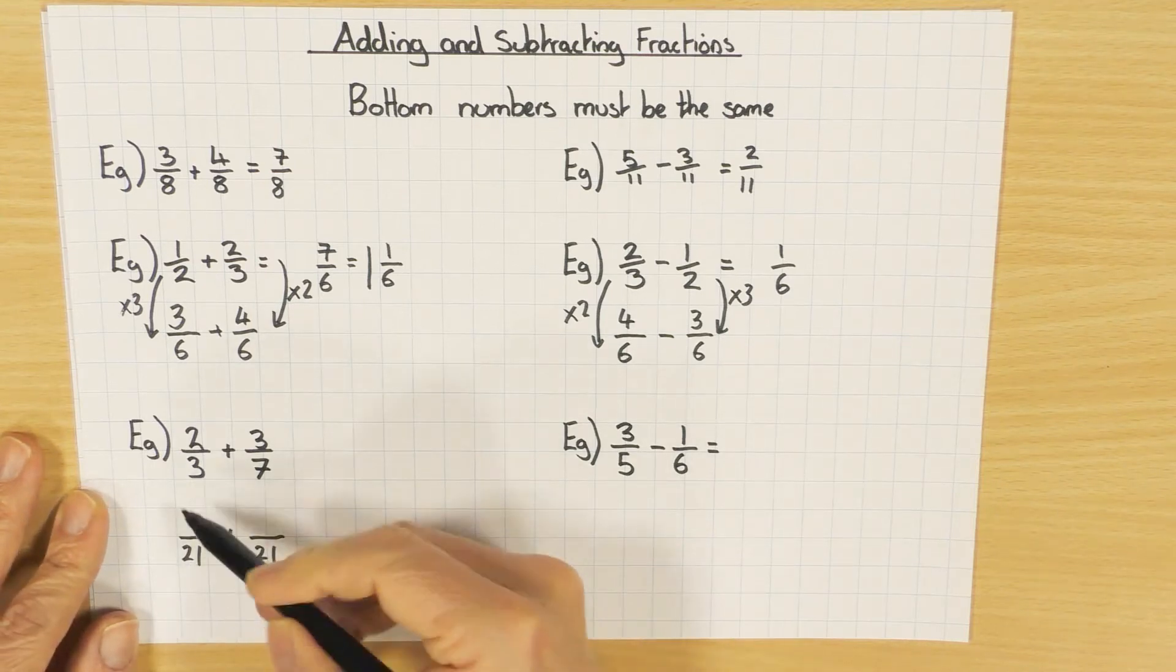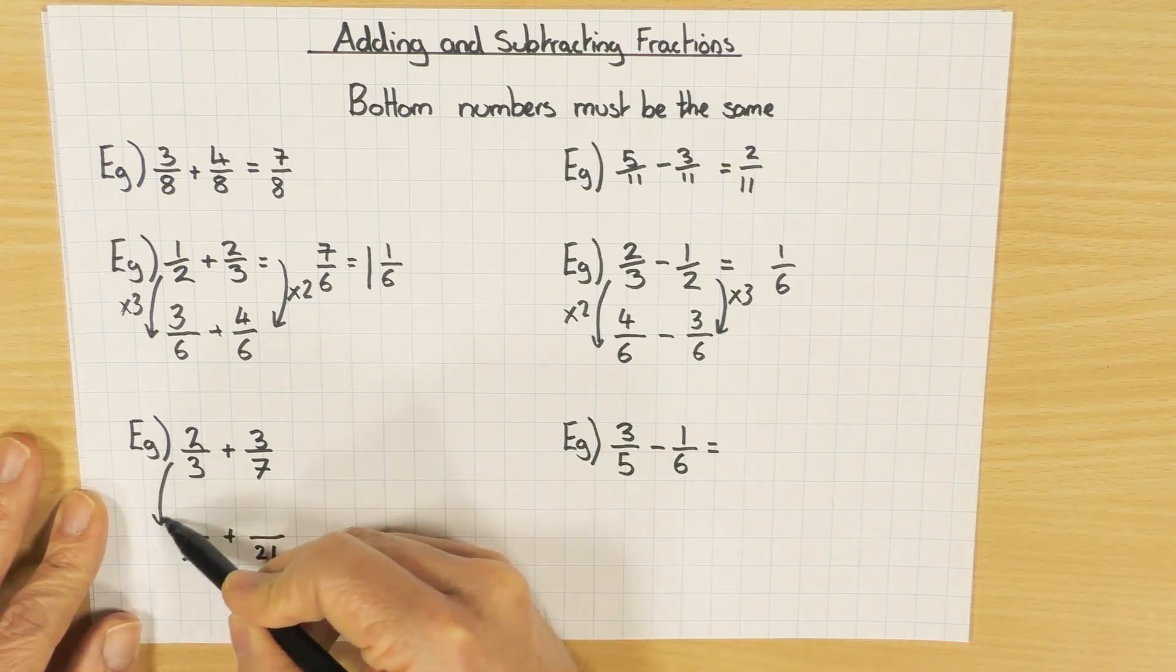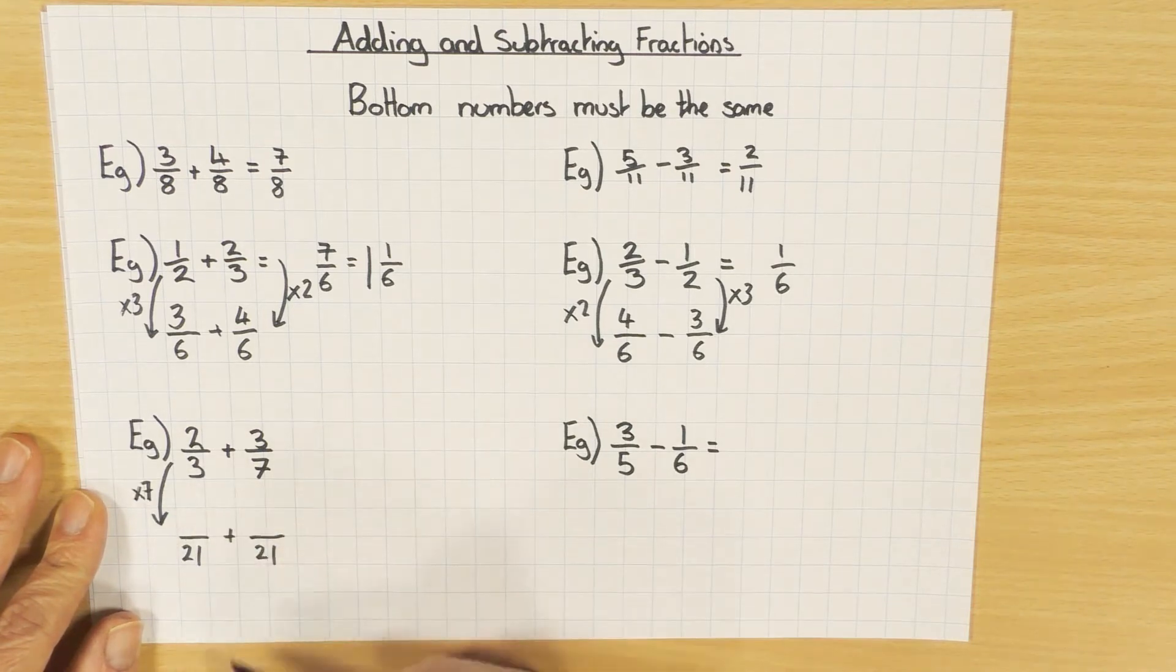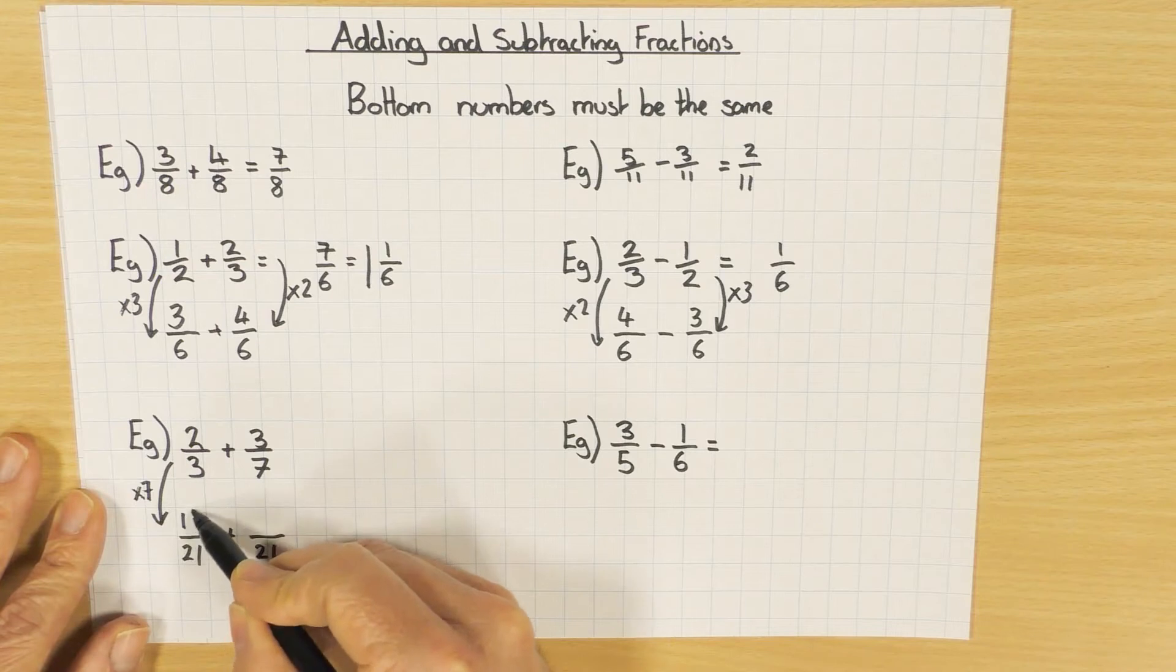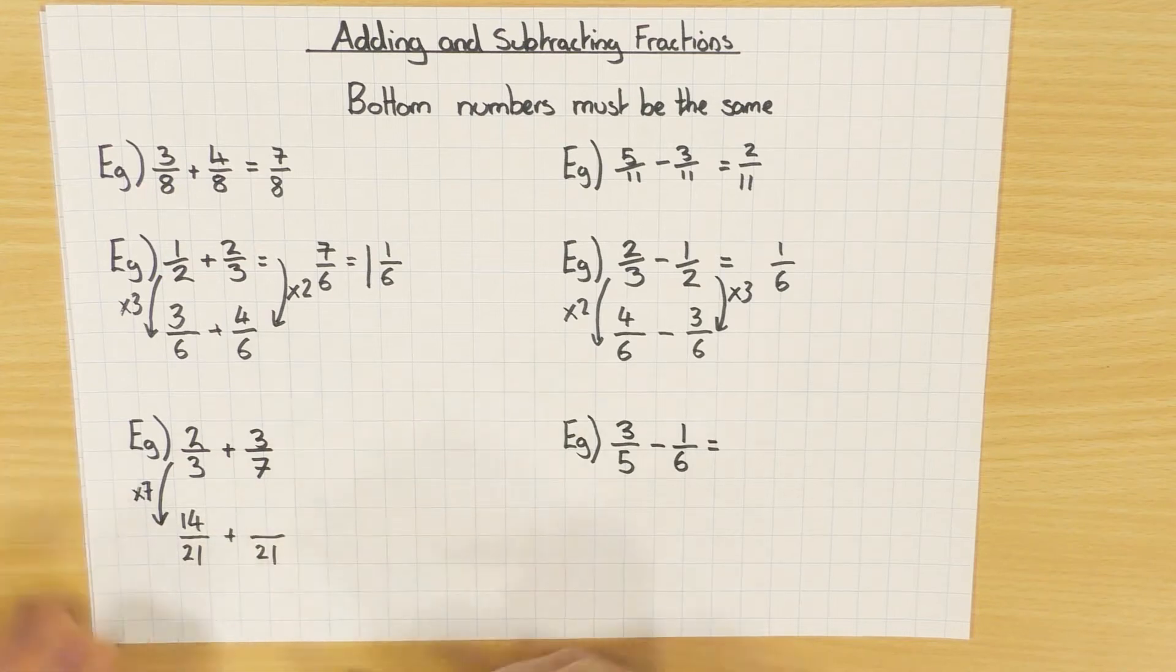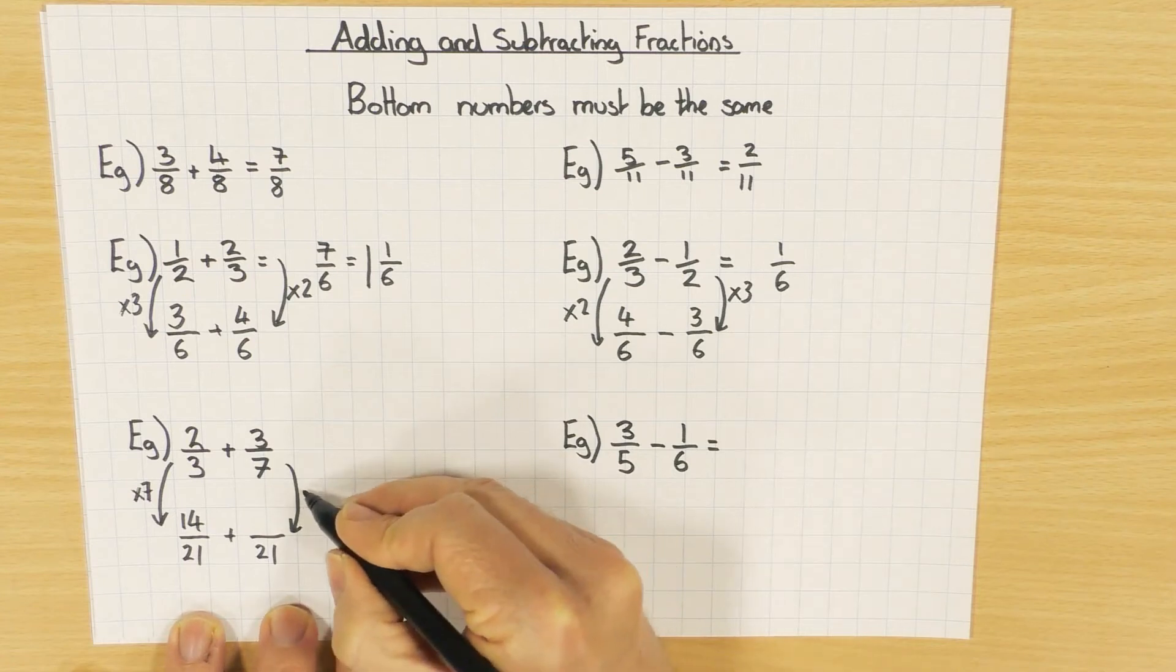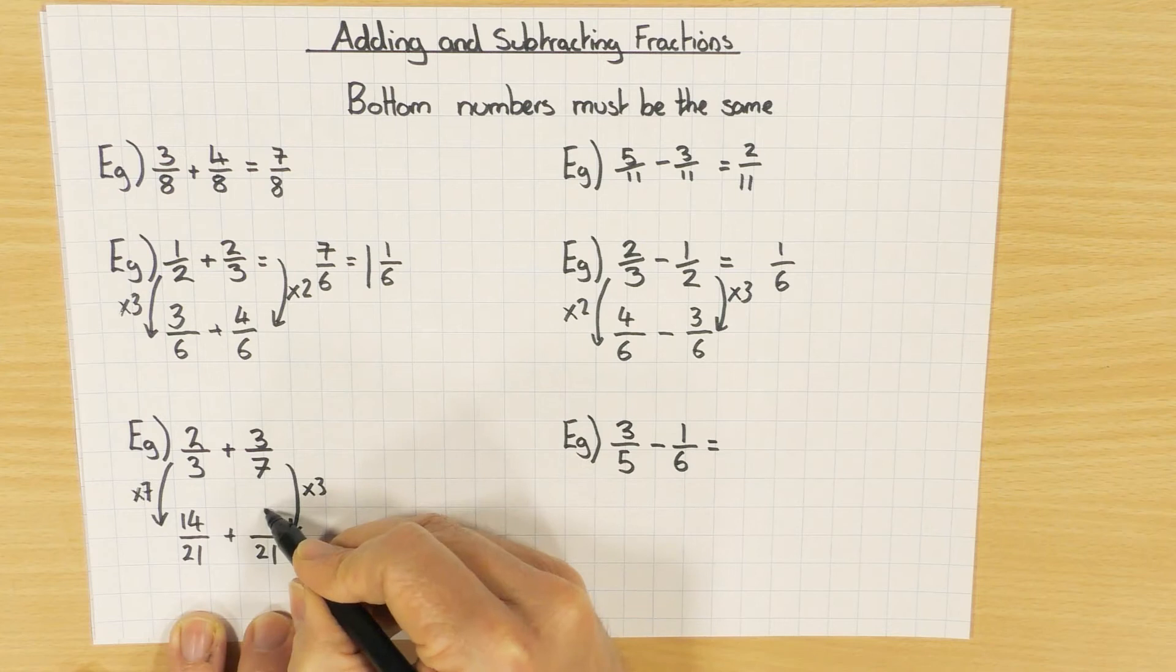So what we've done to three to get to 21, I've times by seven. I times both numerator and denominator by seven so they are still the same fraction, they're still equivalent fractions. What do I do to the seven to get it out of 21? I times by three. Three times three is nine.